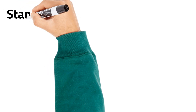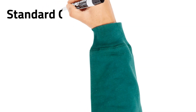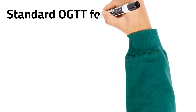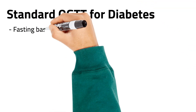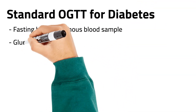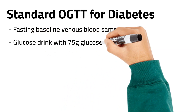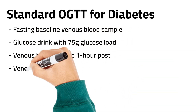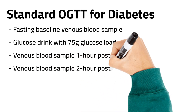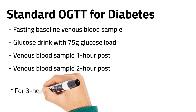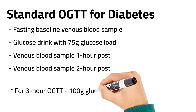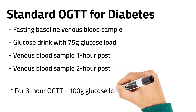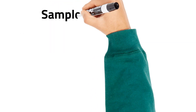The procedure for the standard glucose tolerance test, commonly used for the diagnosis of diabetes, involves collection of a fasting baseline venous blood sample, followed by the ingestion of a standard drink that contains 75 grams of glucose, with blood samples then collected after 1 hour and 2 hours post-glucose ingestion. Some doctors may require the collection of an additional sample 3 hours post-glucose ingestion, in which case the glucose load is 100 grams.